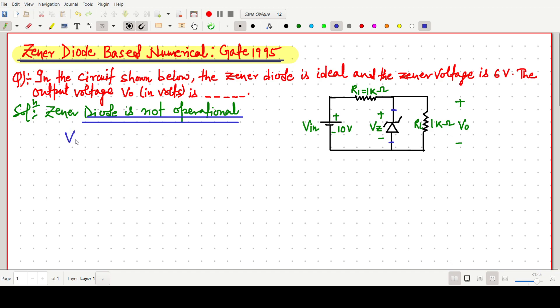Then the corresponding voltage V0 is nothing but simply VIN into RL by (RL plus R1). Very simple voltage divider. So this V0 will be 10 into 1 kilohm, then (1 plus 1) kilohm, so it should be 5V. V0 will be 5V when Zener is not operational.